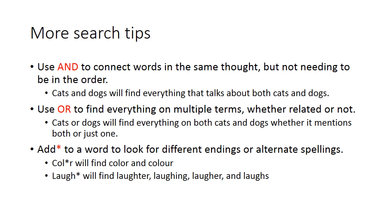You can add an asterisk to the end of a word or in the middle of a word to look for different endings or alternate spellings. Our example below is "color*" — it will find both the English and the American English spellings of color. Adding an asterisk to the end of "laugh" will find the words laughter, laughing, laughs, as well as the word laugh.